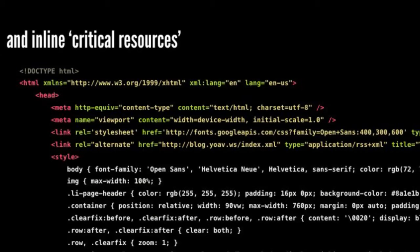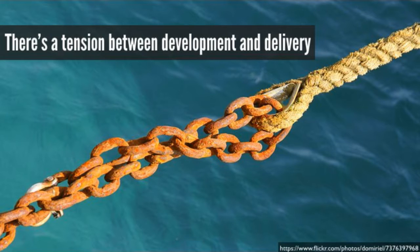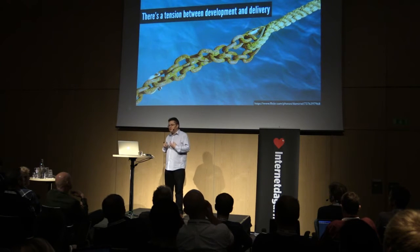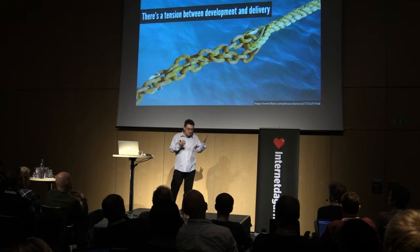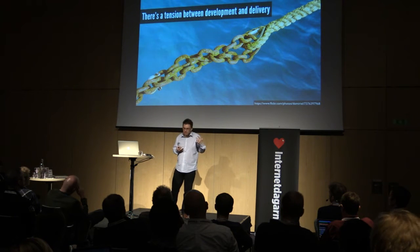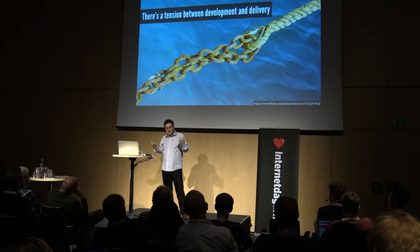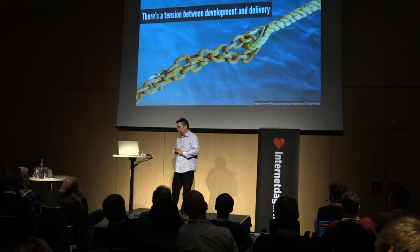The other thing we do is inline critical resources — take CSS, work out what's critical to render the page, and embed it in the head, which gives us maintenance problems. What all these techniques show is there's a tension between development and delivery. As developers, we think of code in modules — we modularize so components have a single responsibility, can be transported and reused, and encapsulate behavior. But that's not always the most efficient way to put it over the network.